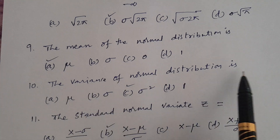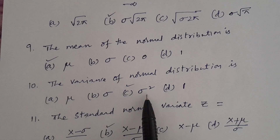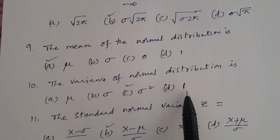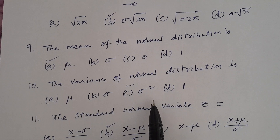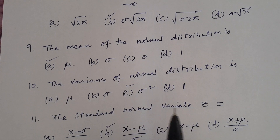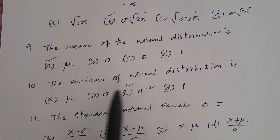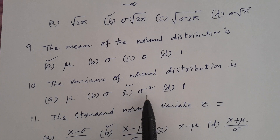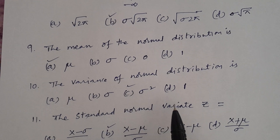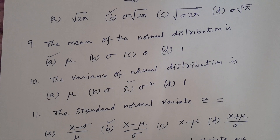Question number ten. The variance of normal distribution is? Options: A. μ, B. σ, C. σ², D. 1. The correct answer is C, σ². For normal distribution: mean is μ, variance is σ², and standard deviation is σ. These are the key parameter values. Therefore the variance of normal distribution is σ².